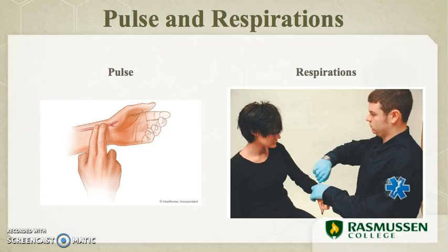Next we have pulse rate — the number of times the heart beats per minute. The pulse is a blood wave created when the left ventricle contracts and then relaxes. The average adult pulse rate is between 60 and 90 beats per minute. If a pulse is irregular, always take it for a full 60 seconds — do not use a 30-times-2 or 15-times-4 method. The most common site for taking a pulse is the radial artery, located on the thumb side of the wrist, though there are other sites to know as well.